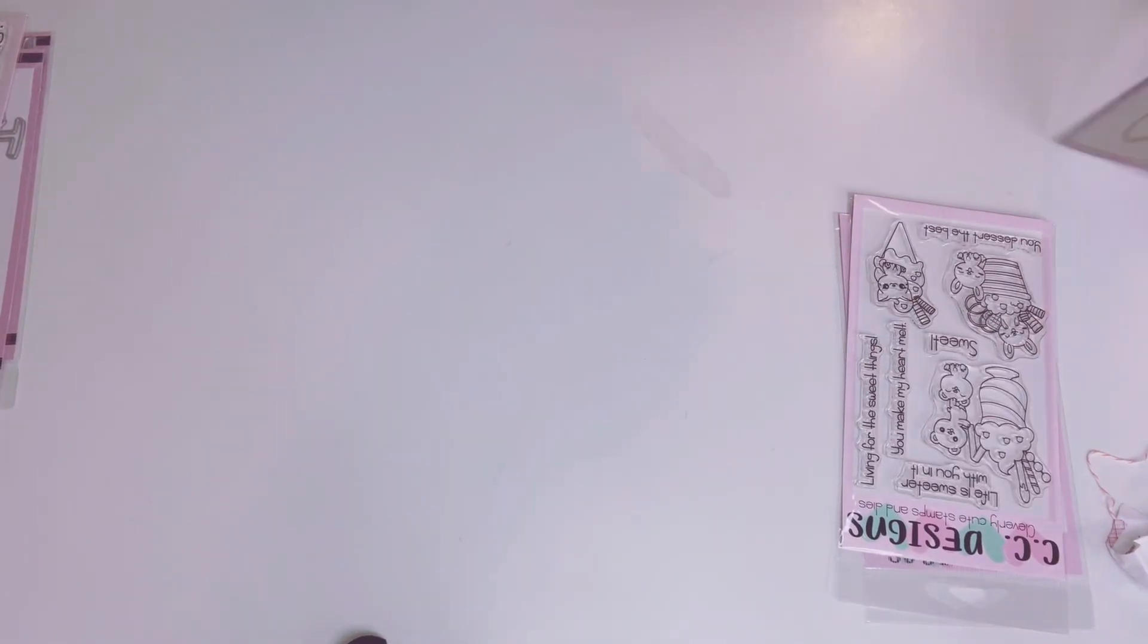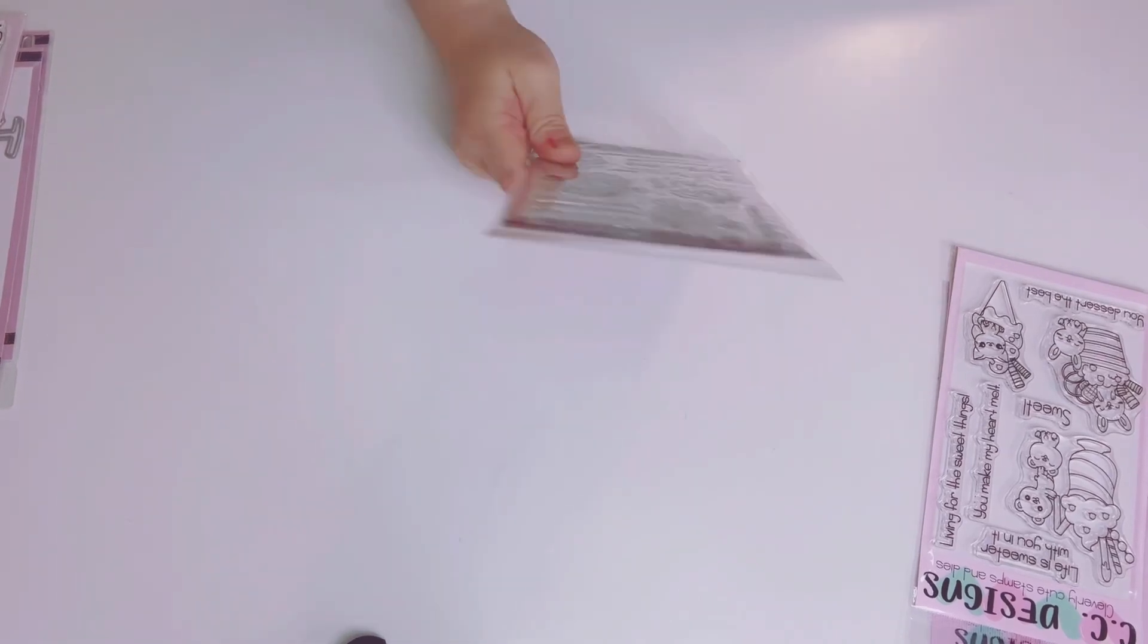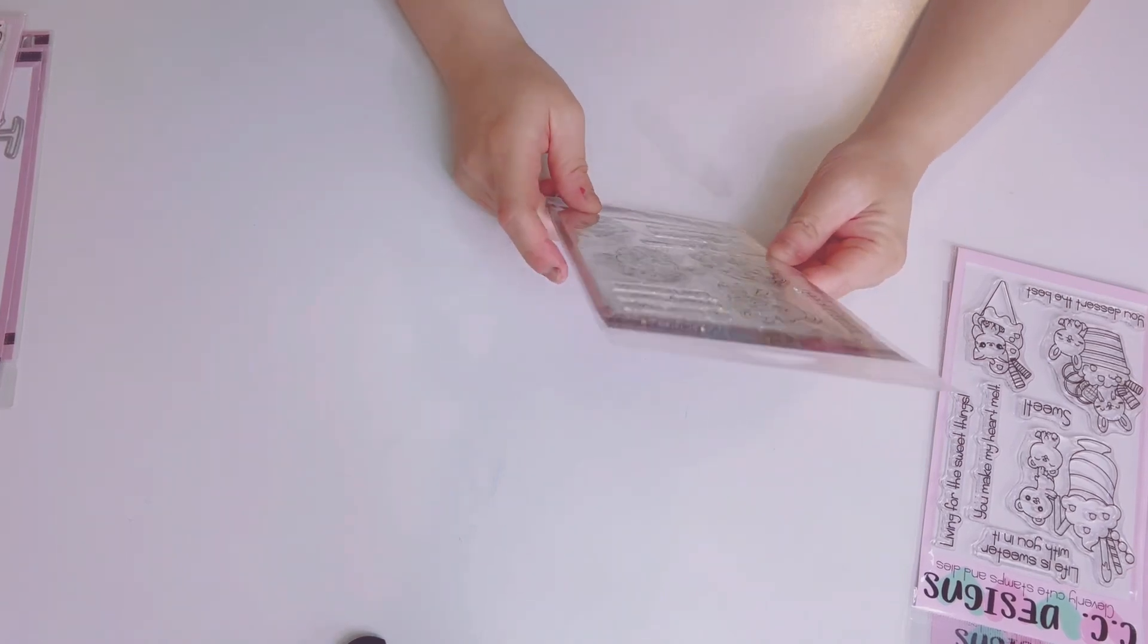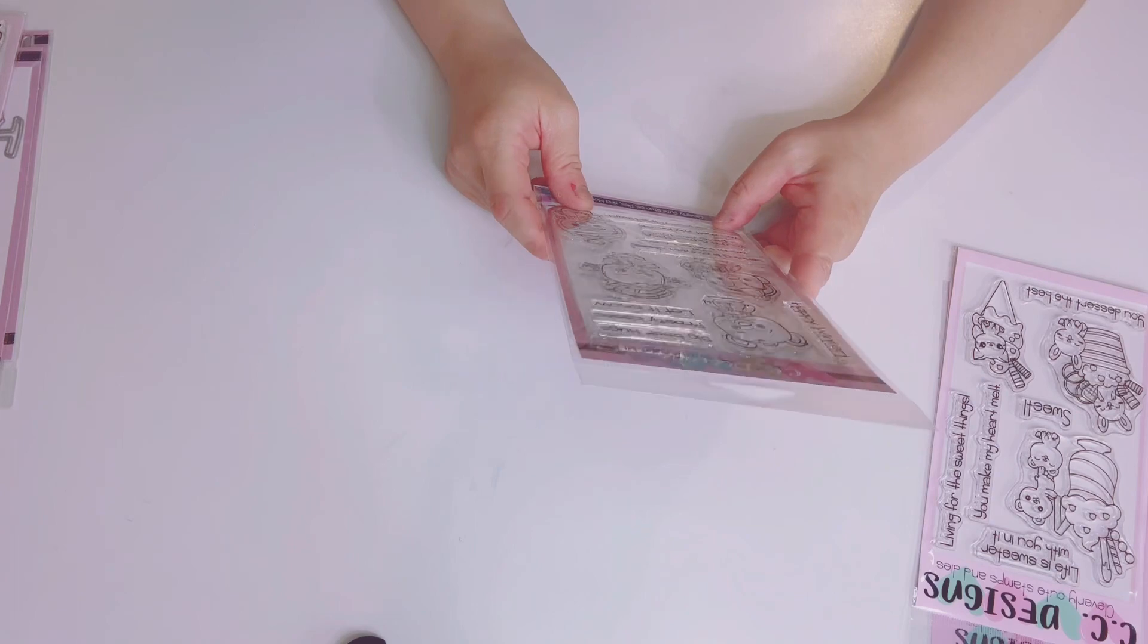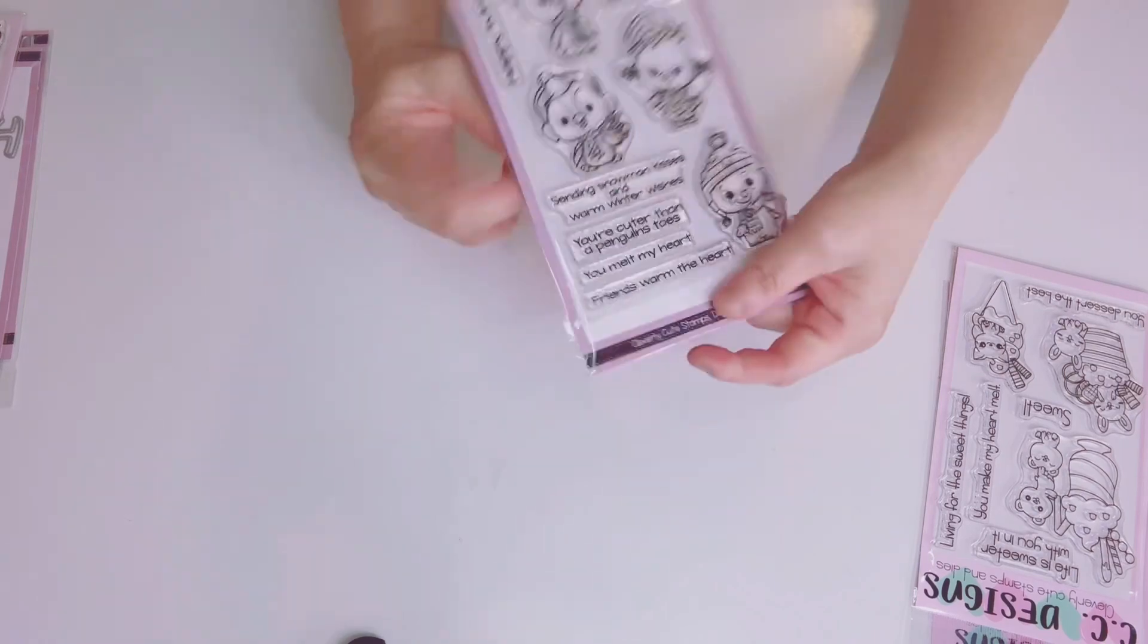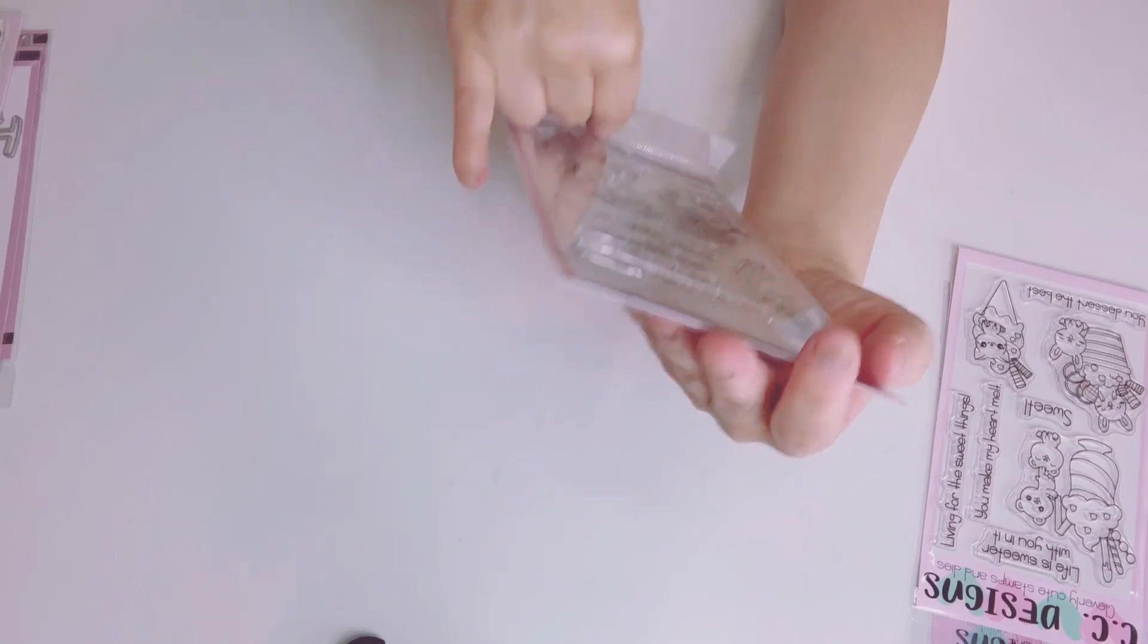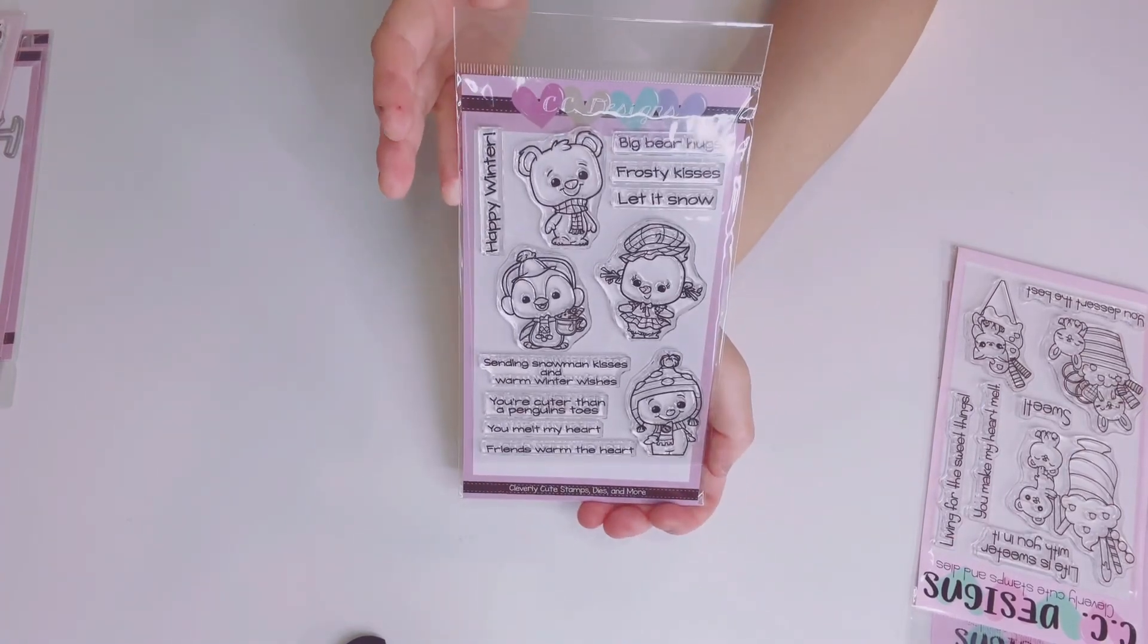And then next one is called Tiny Winter. I did get the dies with that. And then the Tiny Winter one is absolutely adorable. Happy Winter. Big bear hugs. Frosty kisses. Let it snow. Sending a snowman kisses. A warm winter wishes. You're cuter than a penguin's toes. You melt my heart. Friends warm the heart. It's got the penguins, bear, and I think it's like, I don't know who she is. A snowman. She's got the nose of a snowman. But it's got the bear and the penguin, and the little boy I guess. I thought it was so stinking cute. So I got that one.